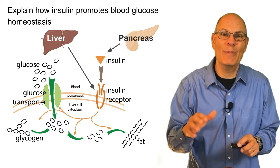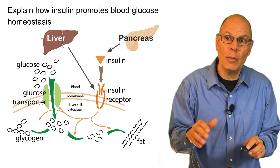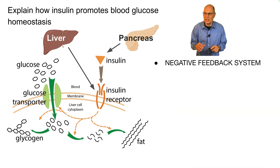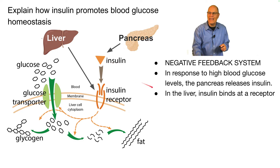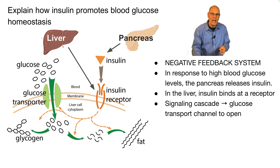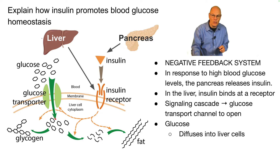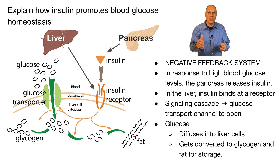In blood sugar homeostasis, it's important for the body to maintain blood glucose levels. The main hormone controlling this is insulin, operating as a negative feedback system. In response to high blood glucose levels — after eating a sugary or starchy meal — the pancreas releases insulin. In the liver, insulin binds to a receptor, unleashing a signaling cascade that activates a glucose transporter channel, allowing facilitated diffusion of glucose into liver cells. The glucose is then converted into glycogen, a storage polysaccharide, or into fat, bringing blood glucose levels down and restoring homeostasis.